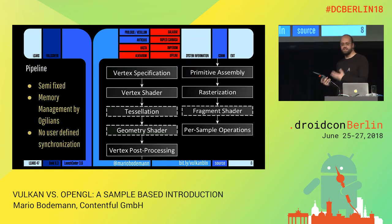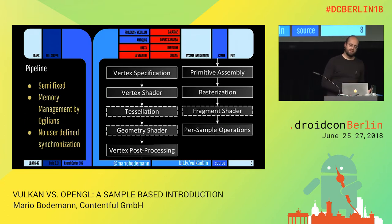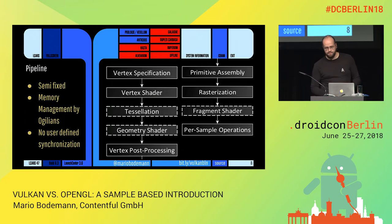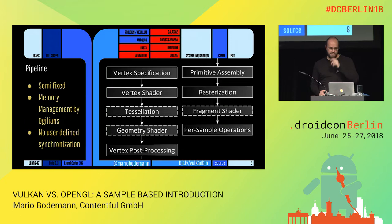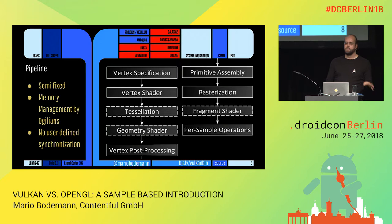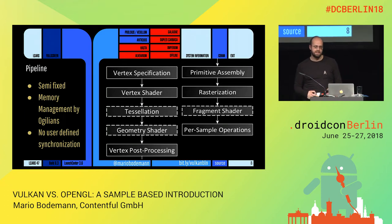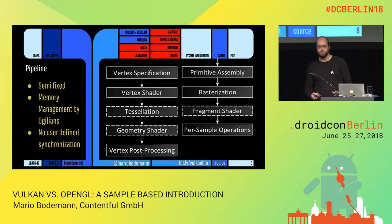This is how they define their structure: in their language we have vertex specification, vertex shader, tessellation, geometry shaders, vertex processing, primitive assembly, rasterization, fragment shaders, and per sample operations. Those things are so-called semi-fixed, because in their language we can change some parts of it, but also some parts are fixed. Everything we call a shader is something we can actually interact with. The tessellation, geometry, and fragment shader is something we can control when we talk to the Ogillians.